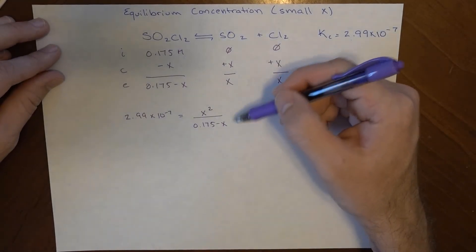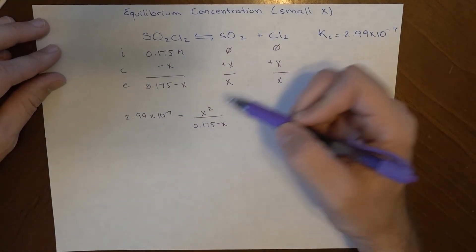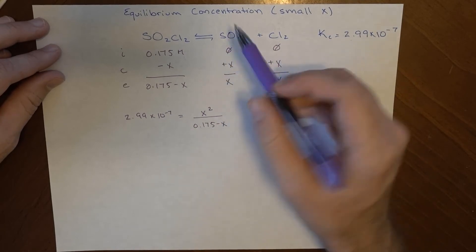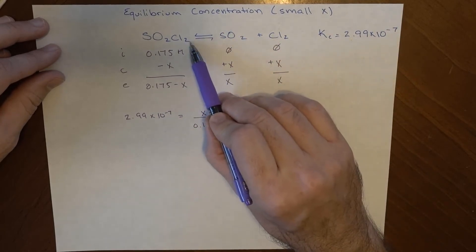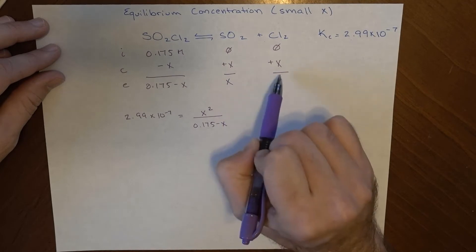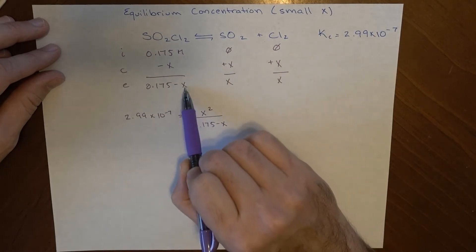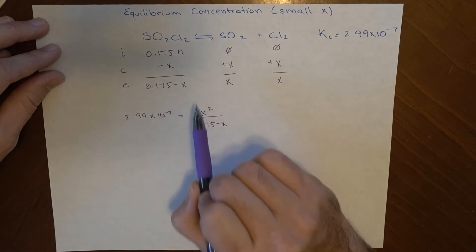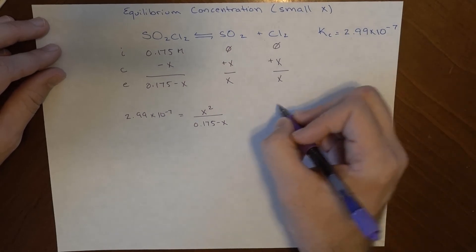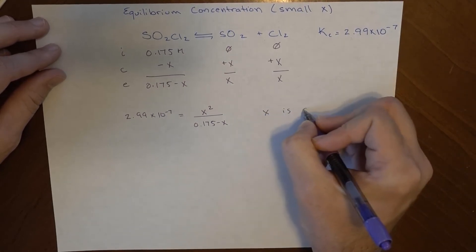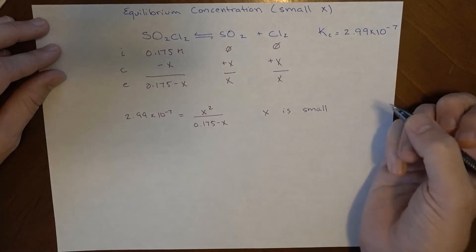I'm looking at this expression and I'm thinking, well, that is a very small value for Kc. So there's a really good chance that very little of this moves in this direction. The concentrations of these are going to be small. Subtracting a small number from this number is not going to make much of a difference.